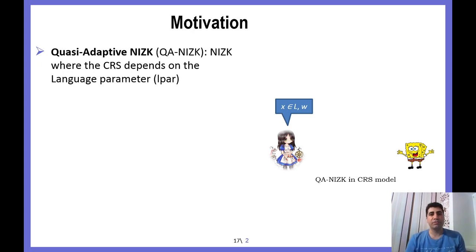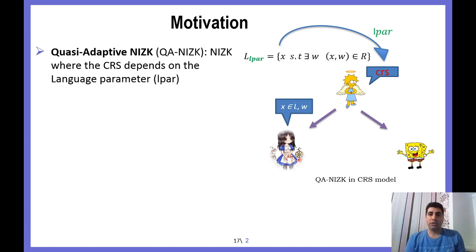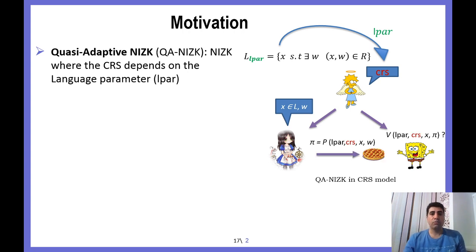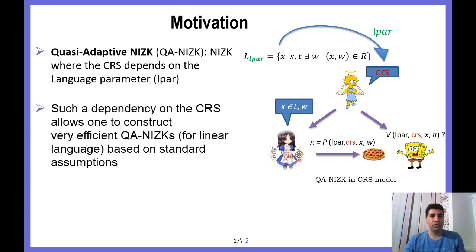QA-NIZK is a variant of NIZK in the CRS model where the CRS depends on the language parameter ρ, which parameterizes the language. As in the CRS model, we assume there is a trusted third party given the language parameter ρ as input. It generates the CRS and shares it to both Prover and Verifier. The Prover, on input ρ and CRS, wants to convince the Verifier of validity of some statement X. Such dependency on the CRS allows construction of very efficient QA-NIZK for linear languages, based on standard assumptions.